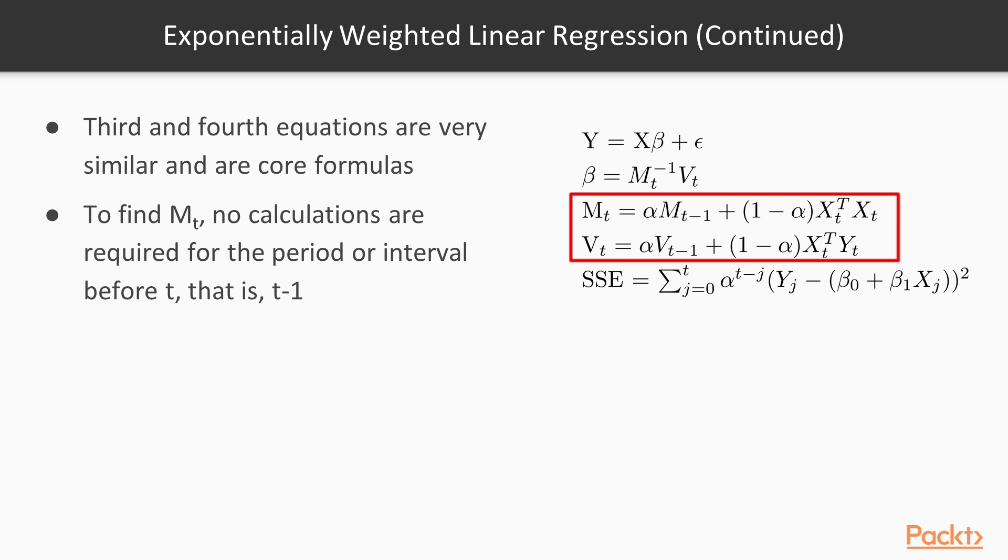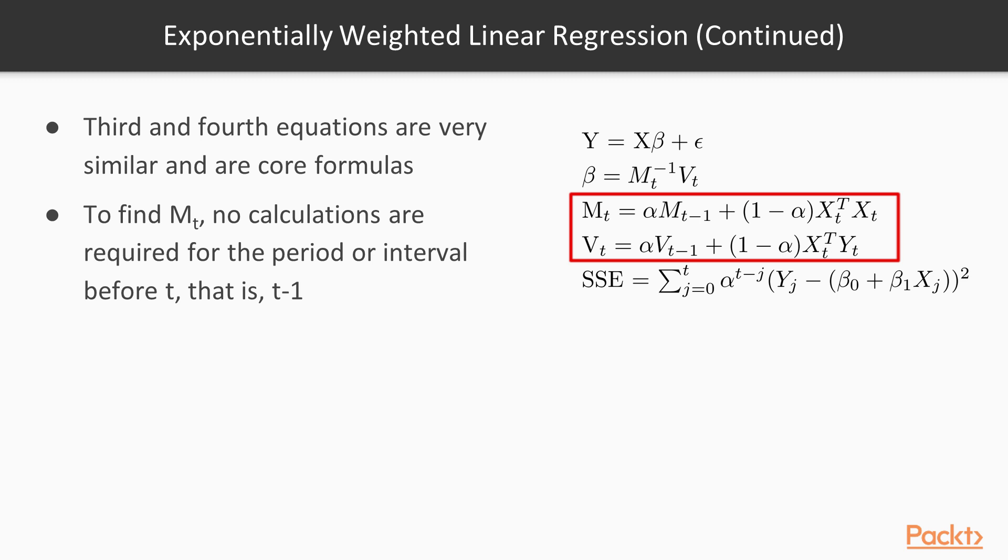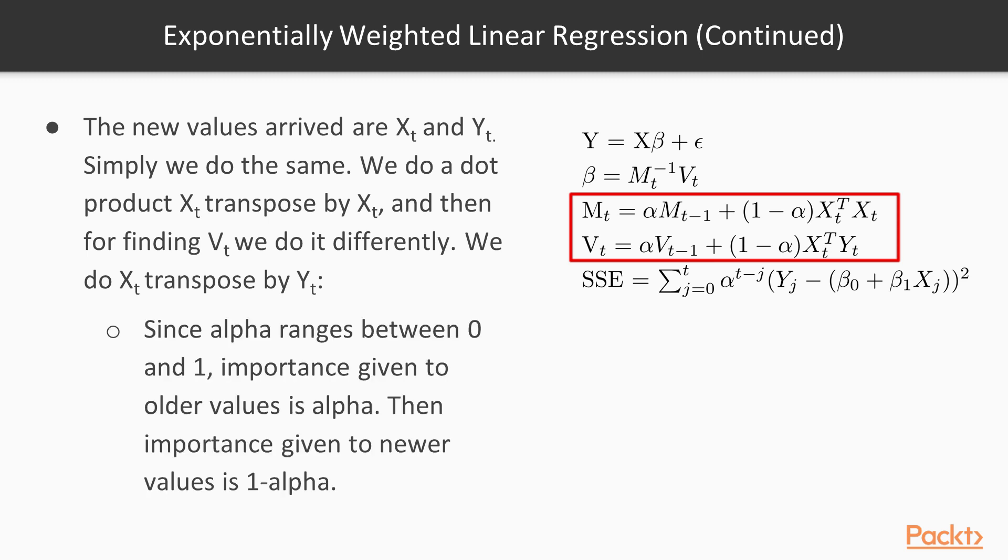This weight, which is often found experimentally or empirically, controls the importance of recent values related to older values. So M at time t equals alpha times M(t-1). That makes sense. So how do we append the new values that have just arrived? The values that have just arrived are the Xt and the Yt. Simply, we do the same: we do a dot product Xt transpose by Xt. And then for finding the matrix V, we do that differently. We do Xt transpose by Yt. Since alpha ranges between 0 and 1, the importance given to the older values is alpha. Then it makes sense that the importance given to the newer values is 1 minus alpha.